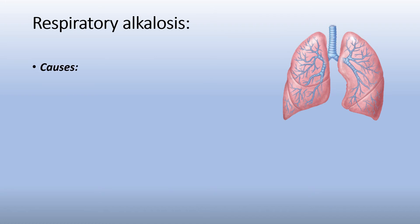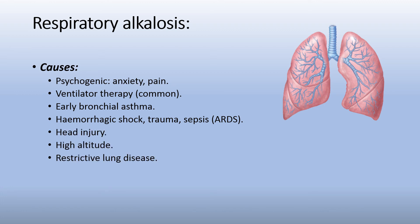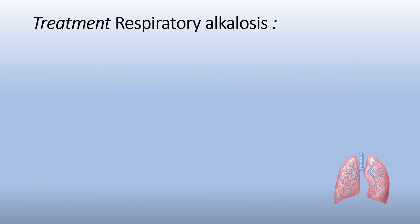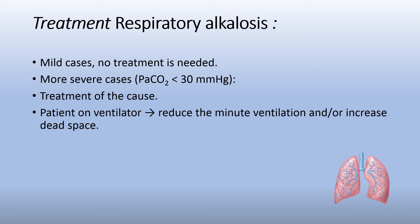Respiratory alkalosis causes include psychogenic causes such as anxiety or pain, ventilatory therapy which is a common cause, early bronchial asthma, hemorrhagic shock, trauma or sepsis, head injury, high altitude, and restrictive conditions. Treatment: mild cases require no treatment. More severe cases with PaCO2 less than 30 mmHg require treatment of the cause. If the patient is on a ventilator, reduce the minute ventilation and/or increase the dead space.